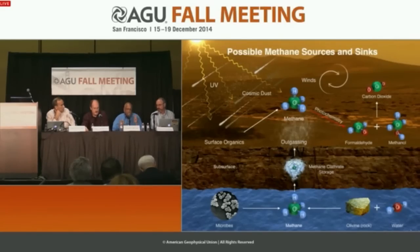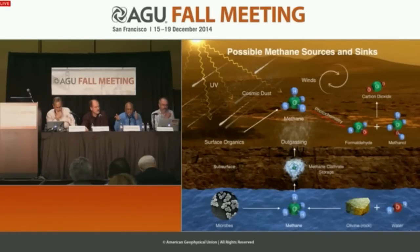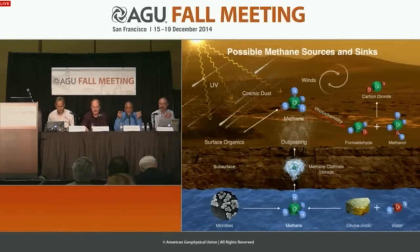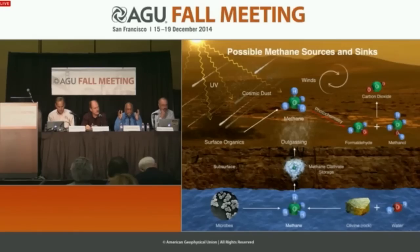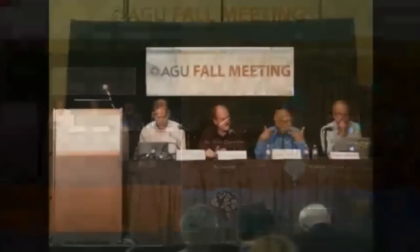The fact that methane was at the background level, suddenly went up, then came back down to the background level just as suddenly, indicates that the source must be relatively well localized and small. Looking at the wind fields in Gale Crater and around Gale Crater, we suspect that the source is northerly. All these observations over a two-year period are strongly suggestive that Mars is currently active.